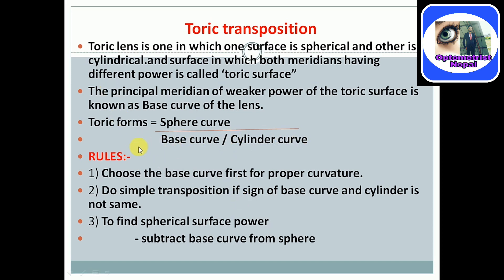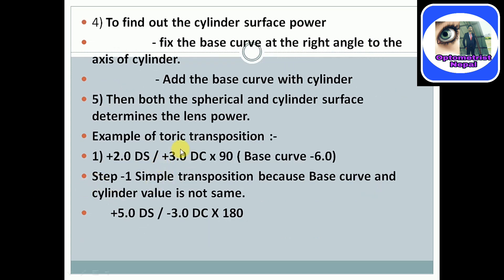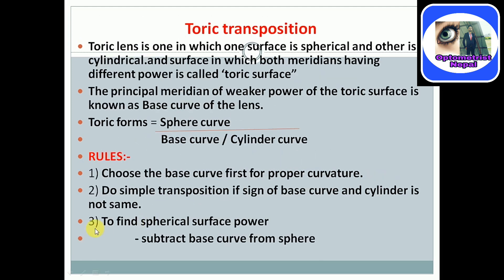There are some rules for toric transposition. Rule one: choose the base curve first for proper curvature — we should know the sign of the base curve in positive or negative form. I have taken one example where the base curve is in negative form. Rule two: do simple transposition if the sign of the base curve and cylinder are not the same — always do simple transposition if the signs are opposite. Rule three: to find spherical surface power, subtract the base curve from the sphere.